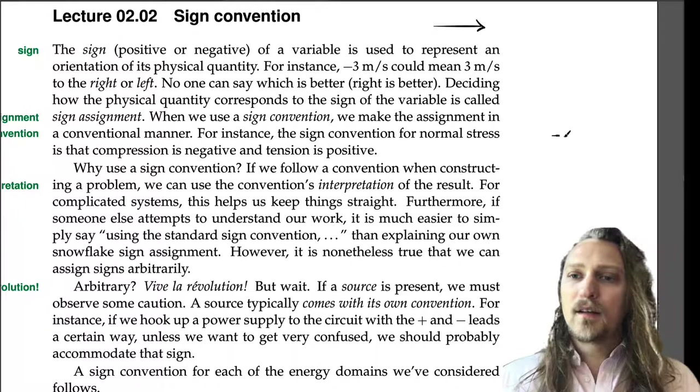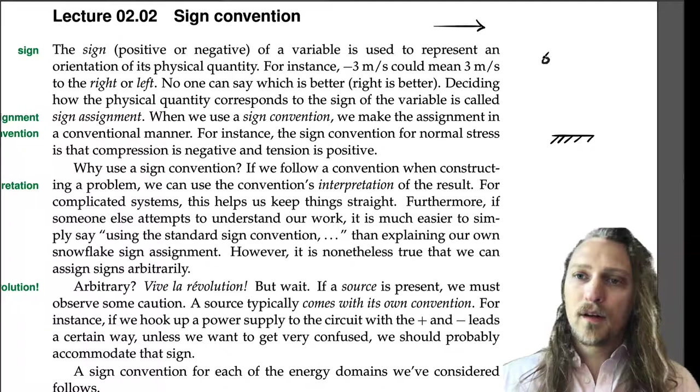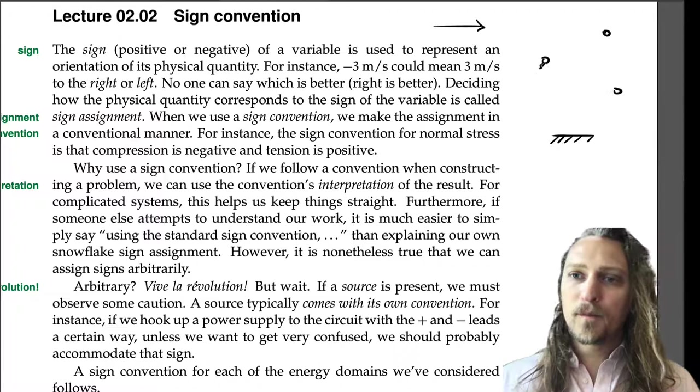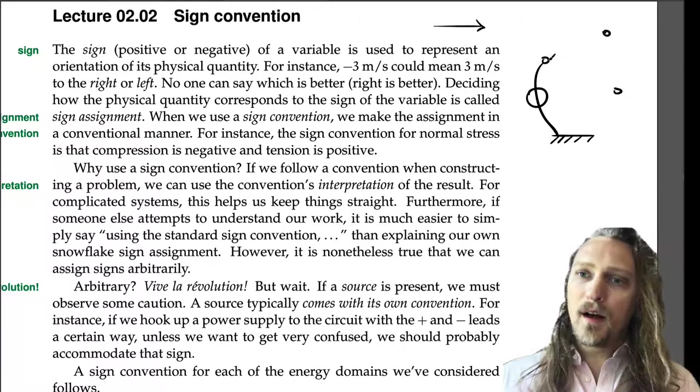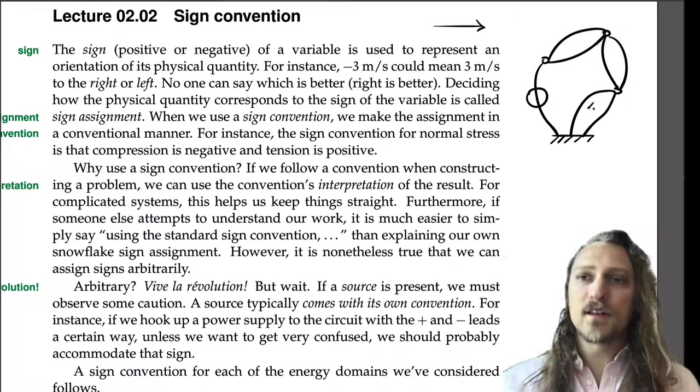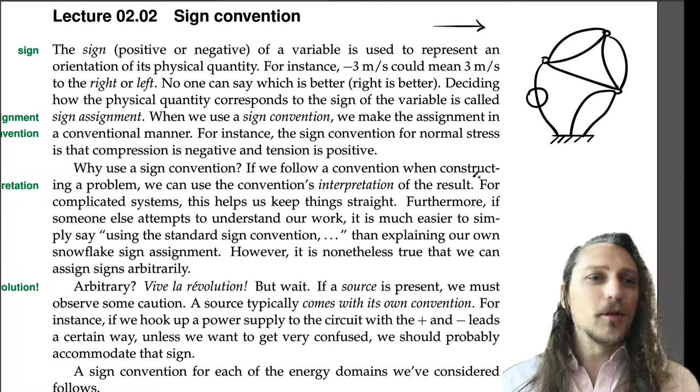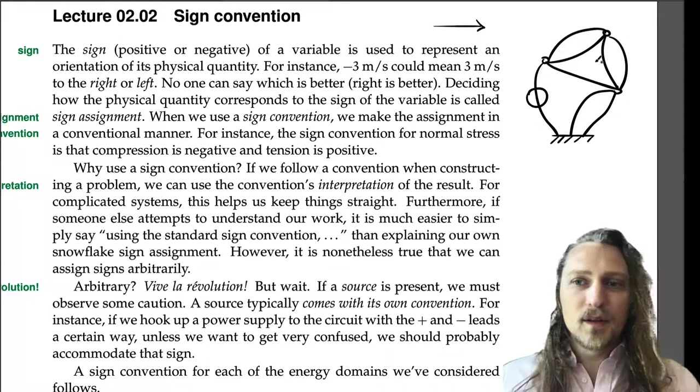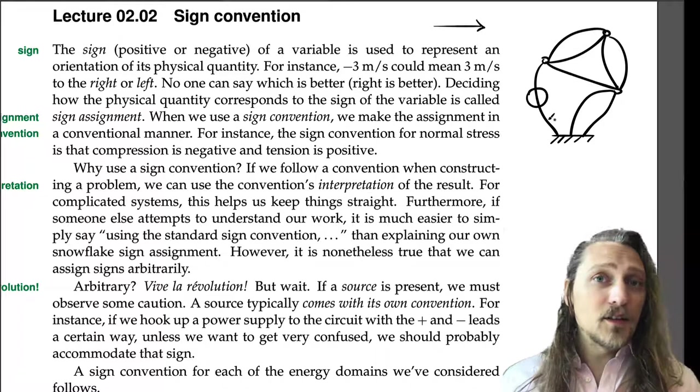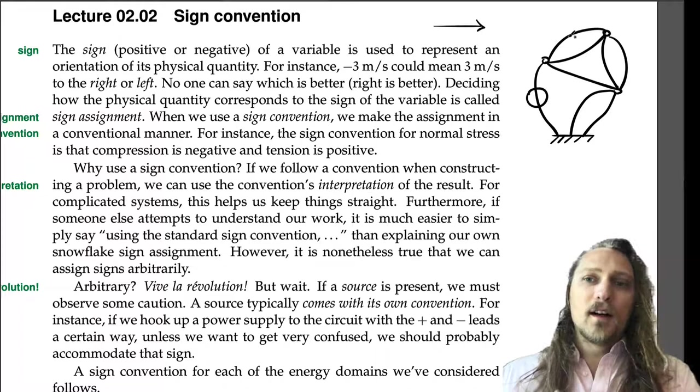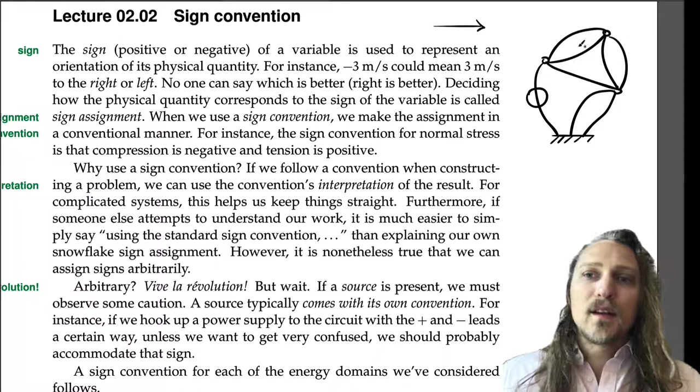Say we've got a linear graph that looks like this, the ground node, maybe a few other nodes here. Maybe we've got a source and we've got some passive elements here, for instance. We could even put one in between here. All right, so we've got elements everywhere. These could be, if it's a mechanical system, springs, masses, dampers, velocity, force source, for an electrical system. It could be a voltage or current source, could be resistors, capacitors, inductors, as the elements.